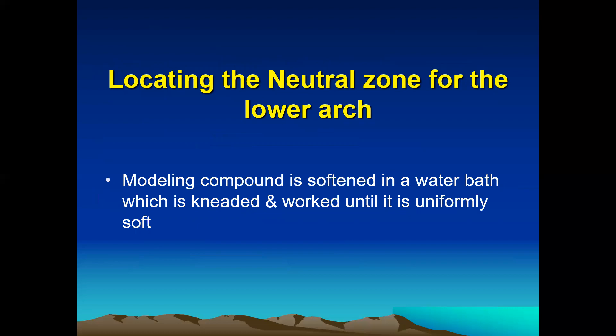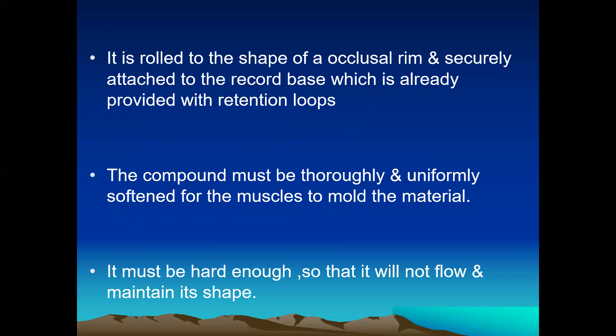Now we discuss locating the neutral zone for the lower arch. First, modeling compound is taken and softened in a temperature-regulated water bath. The usual kneading is done and it is worked until uniformly soft. The softened impression compound is then rolled to the shape of an occlusal rim and secured to the record base which is already provided with the retentive loops. The impression compound must be thoroughly and uniformly softened for the tongue, cheek, and lip muscles to mold the material to the neutral zone. It must be hard enough so it will not flow and maintains its shape.